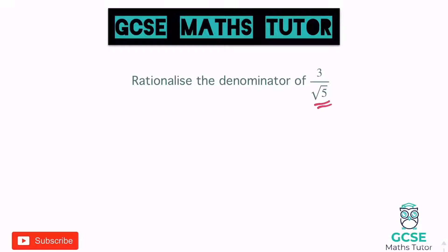Thinking about this in another context: if we want to make an equivalent fraction for something like a half, we can times the top and bottom by two — or anything we like — and that would make two quarters. These are equivalent fractions but written in slightly different ways. The fraction on the left has a two on the bottom, the fraction on the right has a four on the bottom. So we're going to do the same with this — write an equivalent fraction but it's not going to have a root five on the bottom anymore.